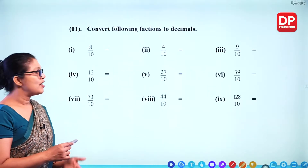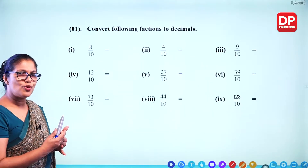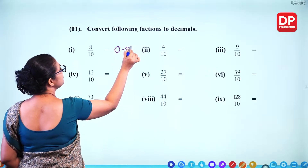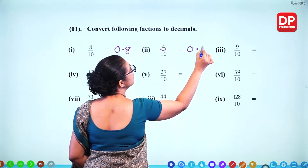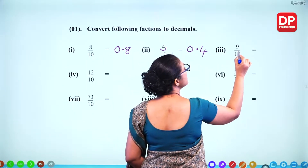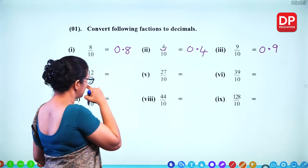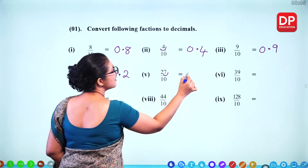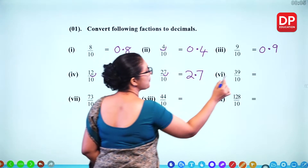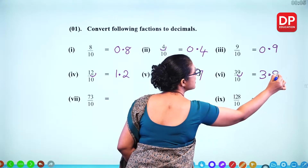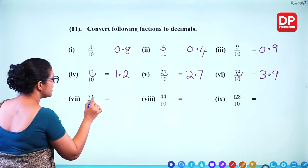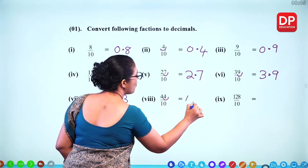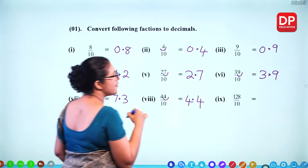Convert the following fractions to decimals. When you get the denominator 10, move the decimal place 1 place to the left: 8/10 = 0.8, 4/10 = 0.4 (here to here), 9/10 = 0.9, 12/10 = 1.2, 27/10 = 2.7, 39/10 = 3.9, 73/10 = 7.3, 44/10 = 4.4, and 128/10 = 12.8 — move the decimal place 1 place to the left.